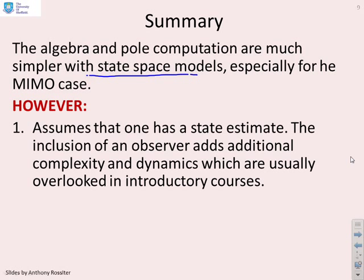However, there are a few subtleties. If you're using state-space methods, you need a state estimate. The control law was based upon a state estimate. And where's that going to come from? You're going to need an observer. And when you add in your observer, that's going to include additional complexity and dynamics. Now, many introductory courses on predictive control, and in fact, many papers in the literature ignore the observer and any complexity and dynamics that go with that. But in reality, if you're going to implement this, it's something you cannot ignore.